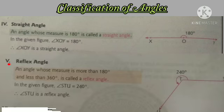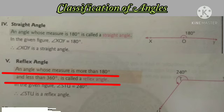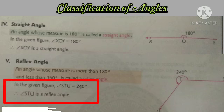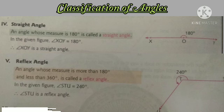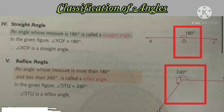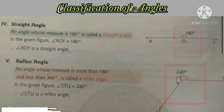Next, reflex angle. An angle whose measure is more than 180 degrees and less than 360 degrees is called a reflex angle. You can see angle STU. You can see the angle in this shape. It is a reflex angle, so it is 240 degrees but it is not more than 360 degrees. So such angles are called reflex angles. You can see the arrow marking is outside the angle, whereas for other angles they are inside.